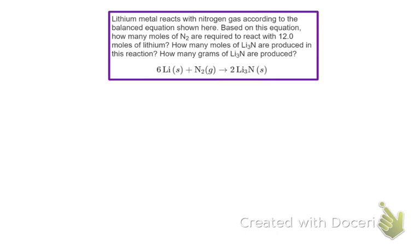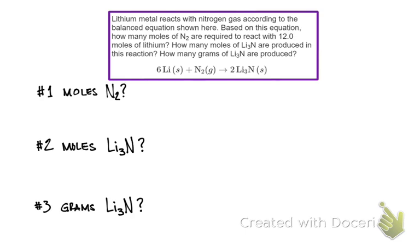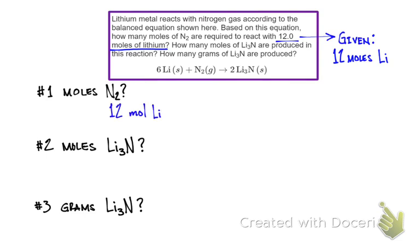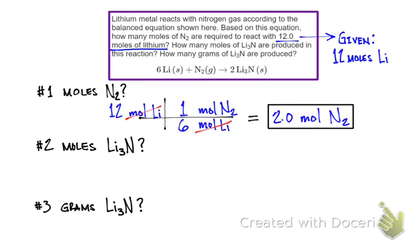Here's another example: lithium metal reacts with nitrogen gas according to the balanced equation shown. Based on this equation, how many moles of nitrogen gas are required to react with 12 moles of lithium? How many moles of lithium nitride are produced, and how many grams of lithium nitride are produced? We are given 12 moles of lithium as our starting point. Set up the dimensional analysis and the mole ratio between lithium and nitrogen gas, which is 6 to 1 based on the coefficients. Moles of lithium cancel out and that gives us 2 moles of nitrogen gas.